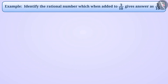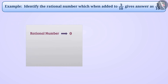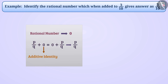Next example: identify the rational number which when added to 3/10 gives the answer 3/10. We know that 0 is the only rational number which if added to any number makes no change in its value. Therefore, for addition of rational numbers, 0 is the additive identity. If we add 0 to 3/10, there is no change, so the required rational number is 0.